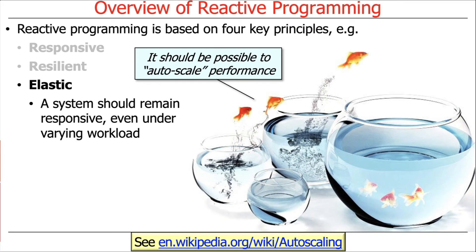Another important principle is elasticity, which means the system should remain responsive even as the workload goes up and down — especially as it goes up. When the workload goes down, it's easy to be responsive with less work; it's much harder when there's more. In particular, we'd like to autoscale performance. At the very least, we want to take advantage of multiple cores if they exist.